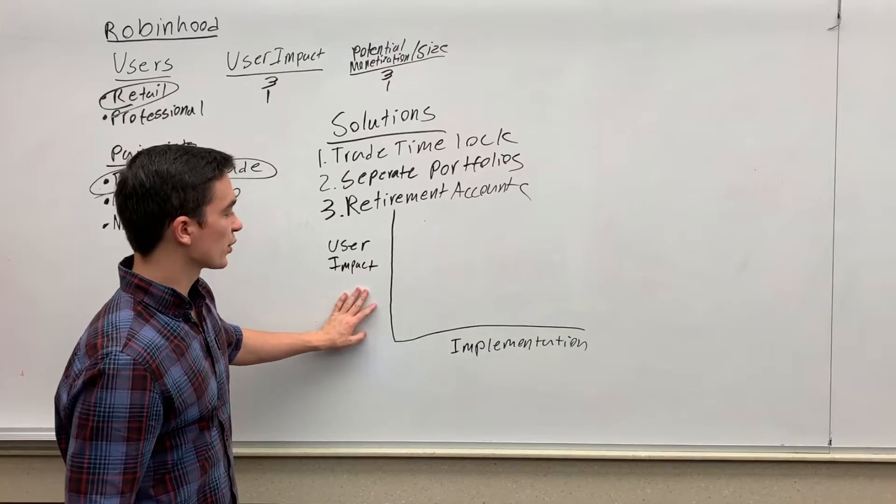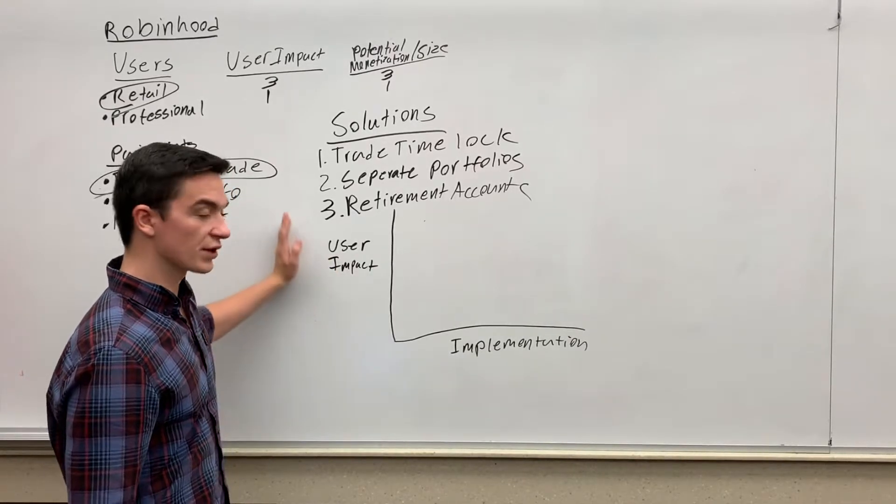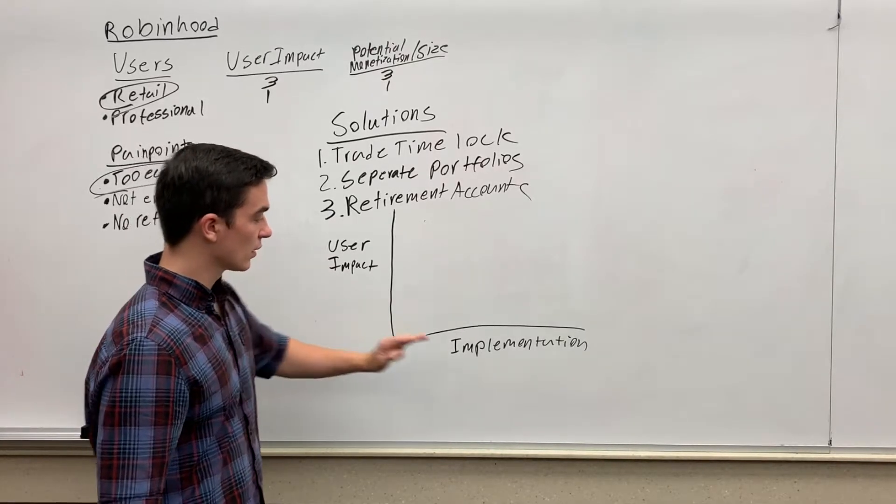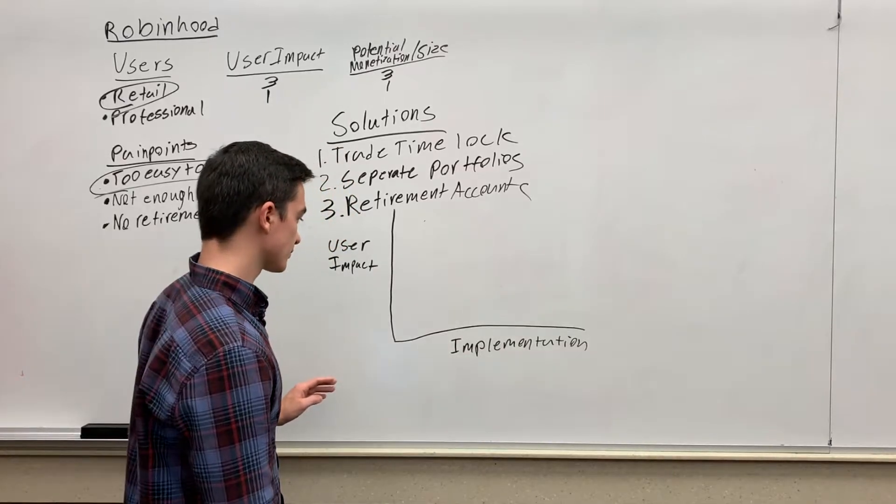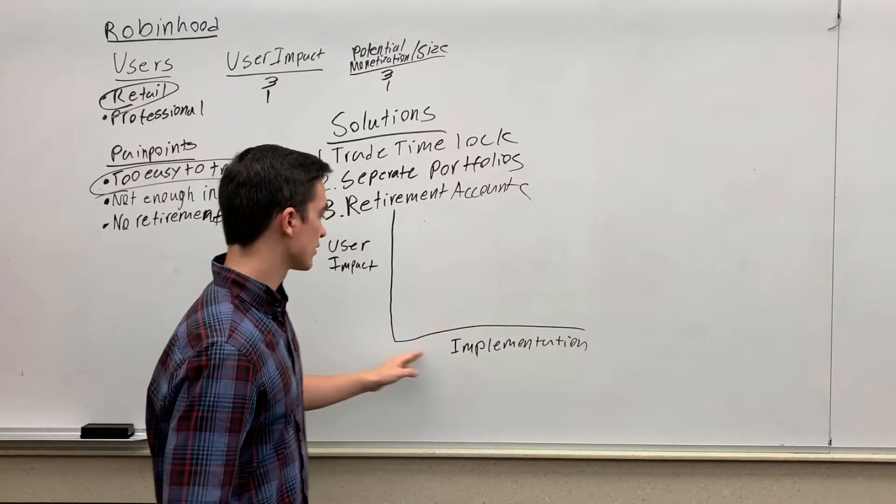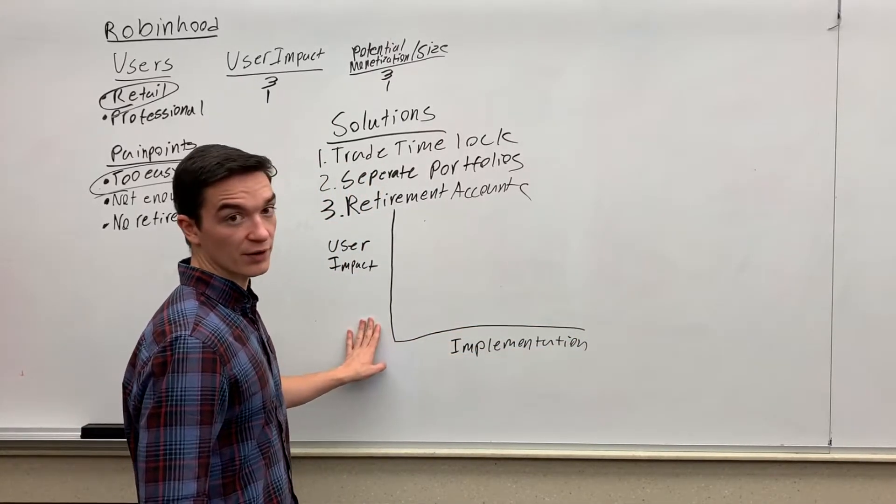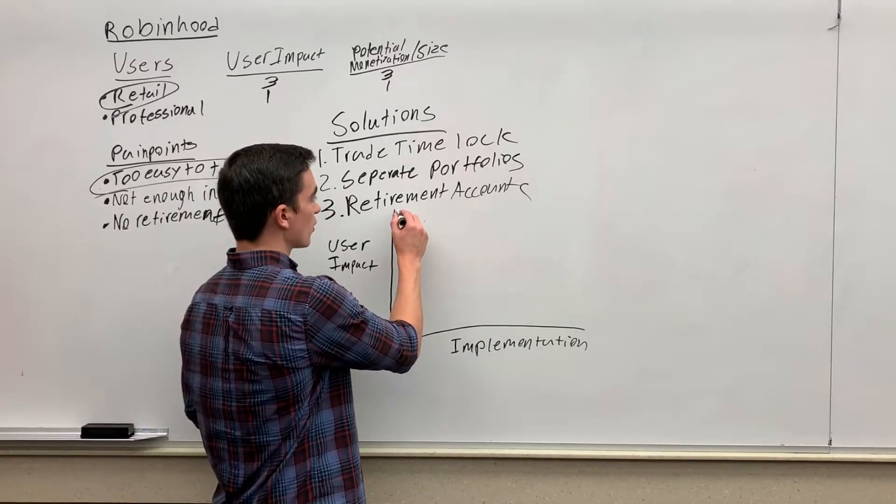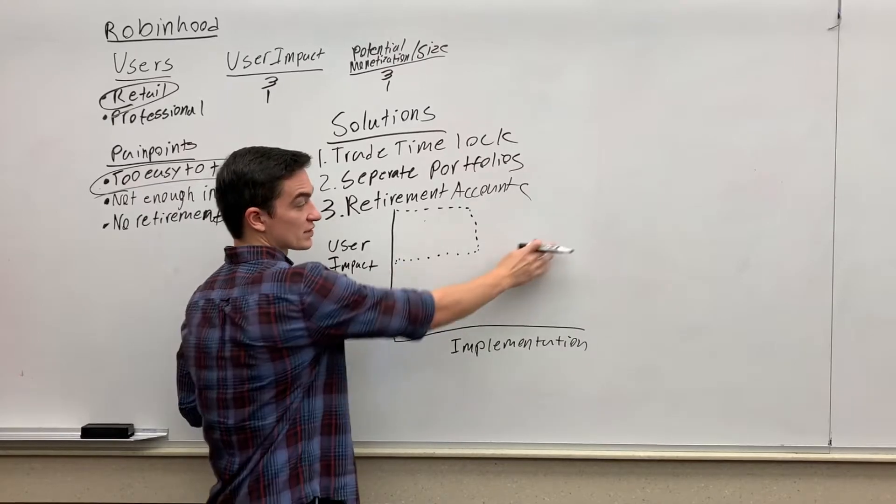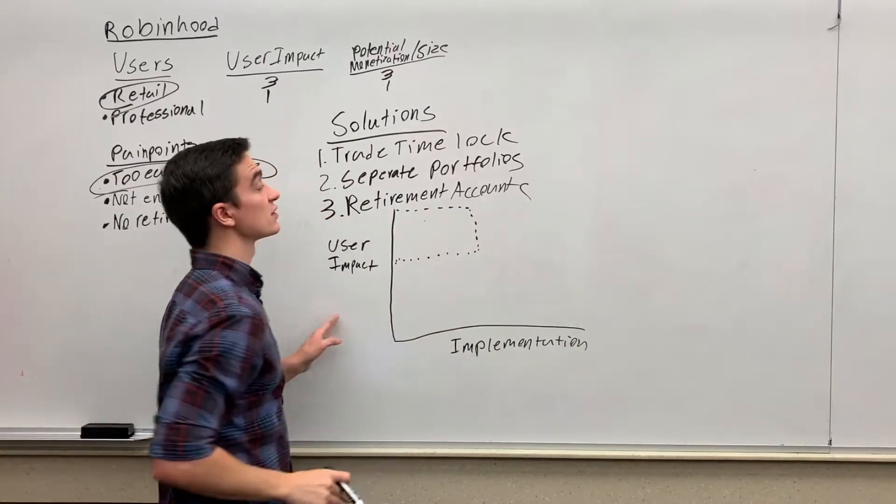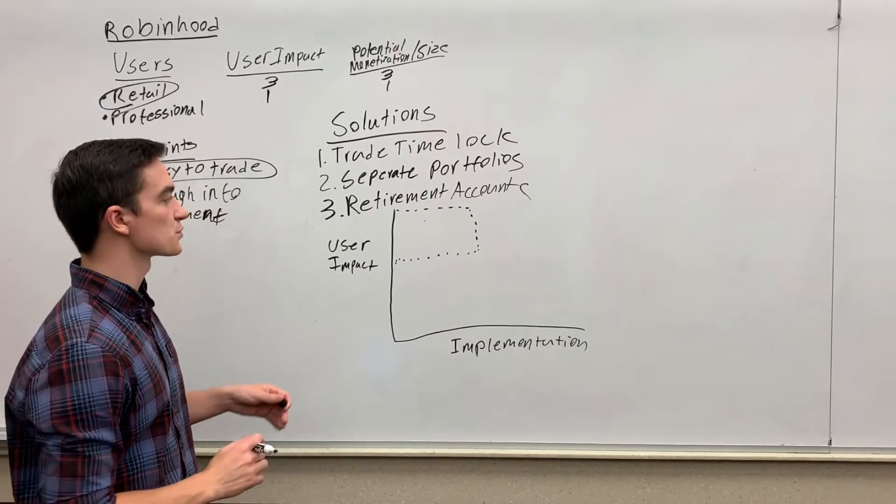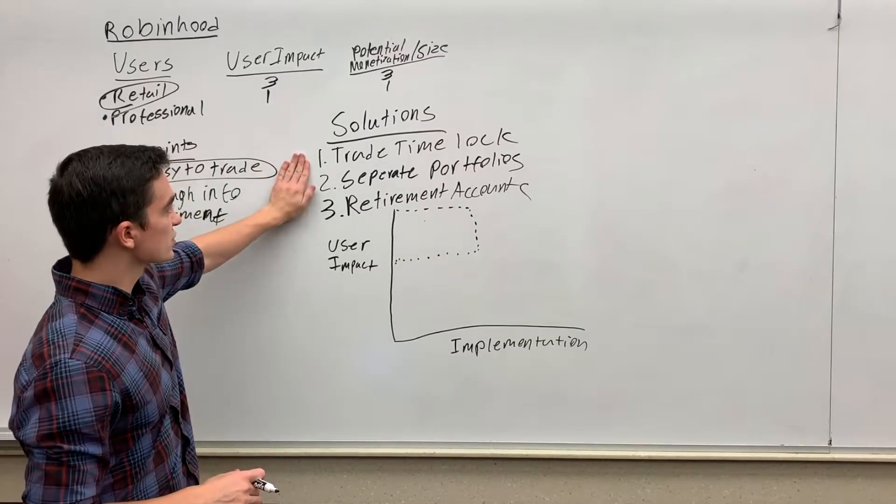So this is the diagram we're going to use. The y-axis is going to be our user impact—how helpful to our users is this solution going to be. And then implementation—this is going to be very difficult to implement, this is going to be very easy to implement. So ultimately we want our solution to be about in this quadrant right here, because this is going to be harder to implement, this is going to be easiest to implement. So I'm not going to worry about specific numbers because we're just ranking these relatively to each other, so placement doesn't really matter, just comparatively.